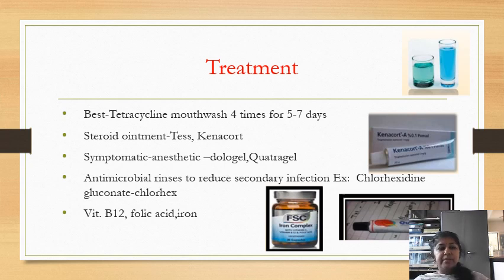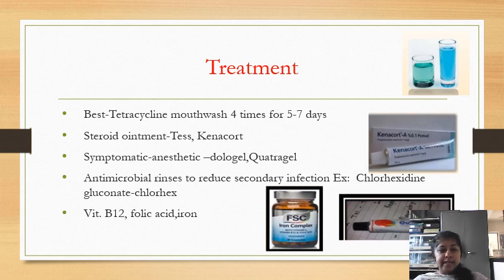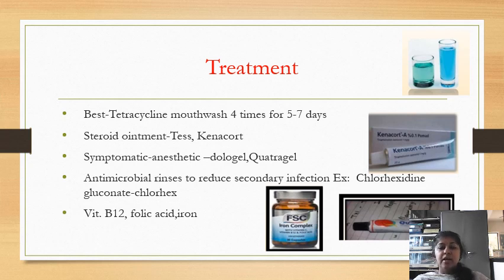There is no specific treatment for recurrent aphthous stomatitis, and over the years many drugs have been advocated. One of the most commonly used treatments is tetracycline mouthwash — used 4 times daily for 5 to 7 days — which can reduce pain, size of the lesion, and healing time. Steroid ointments such as triamcinolone acetonide can also be used. Anesthetic agents such as lignocaine gel can be used, and antimicrobial rinses such as chlorhexidine gluconate mouthwash can reduce secondary infections.